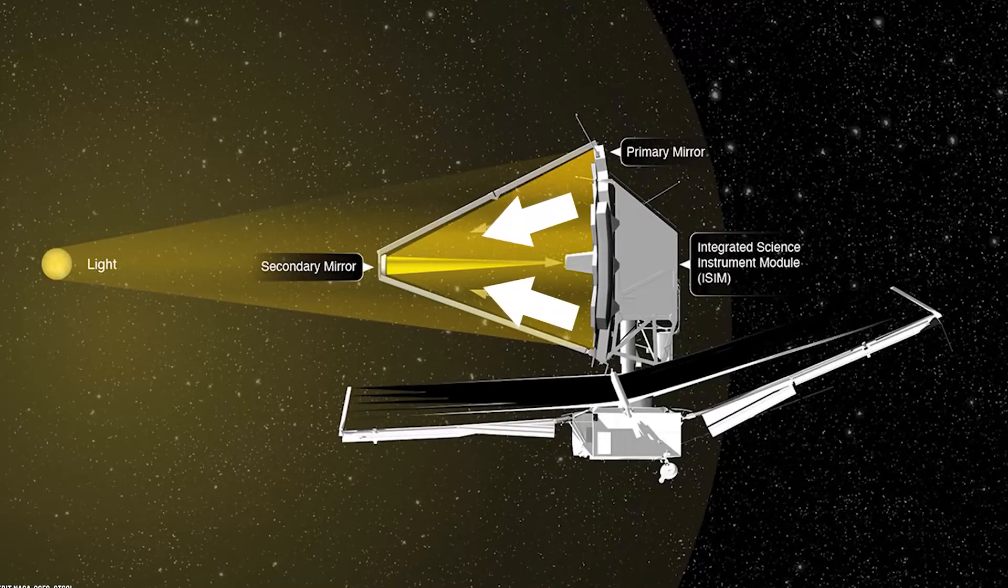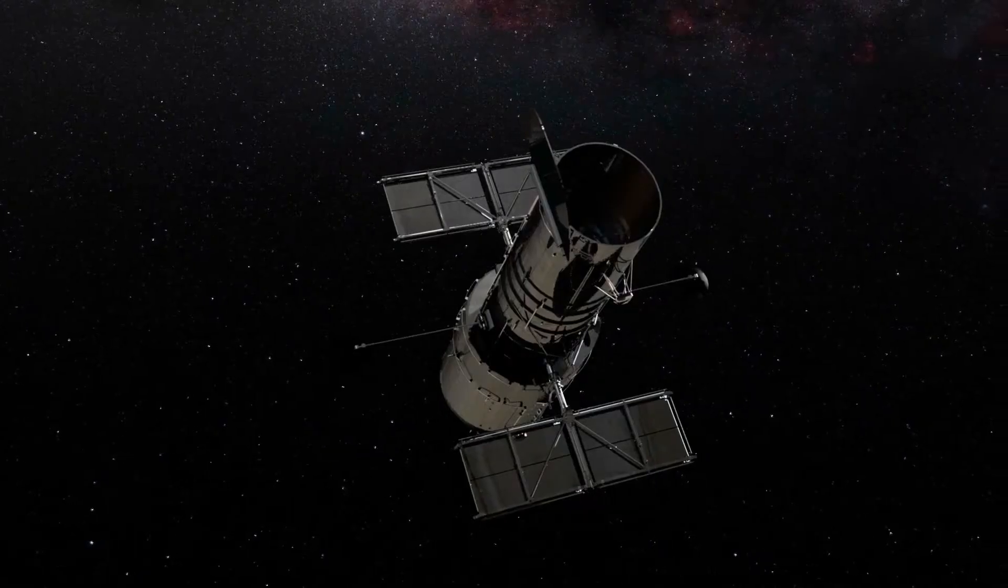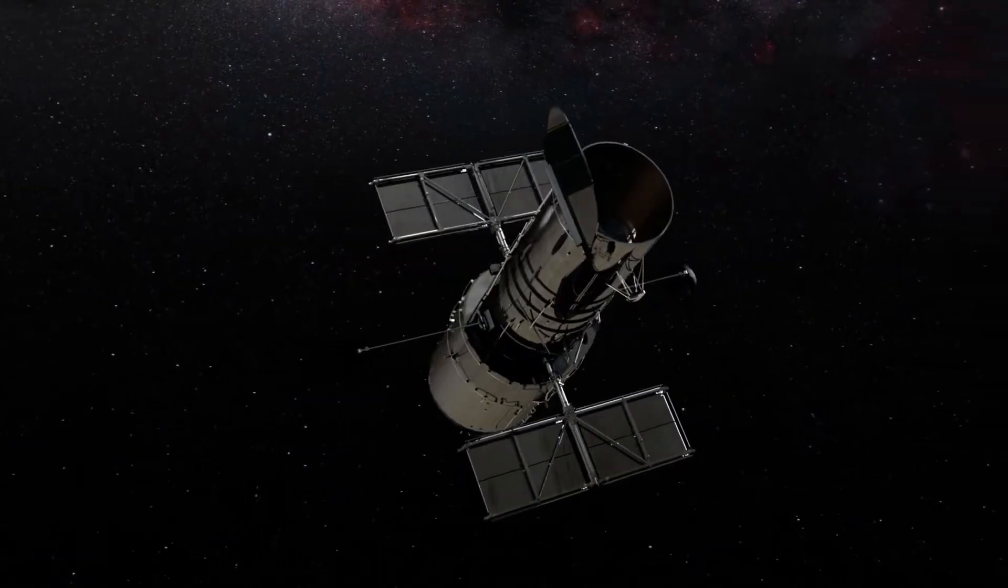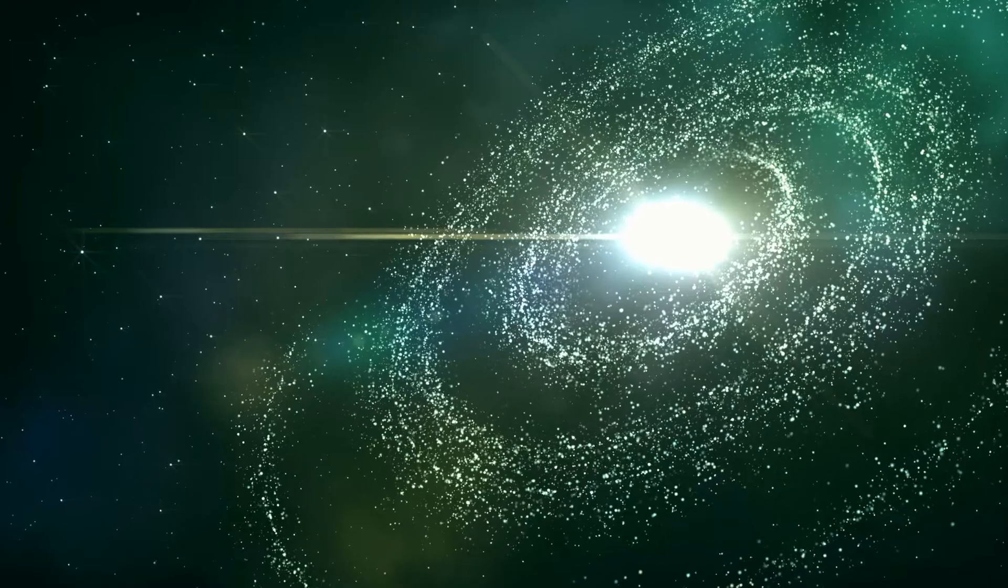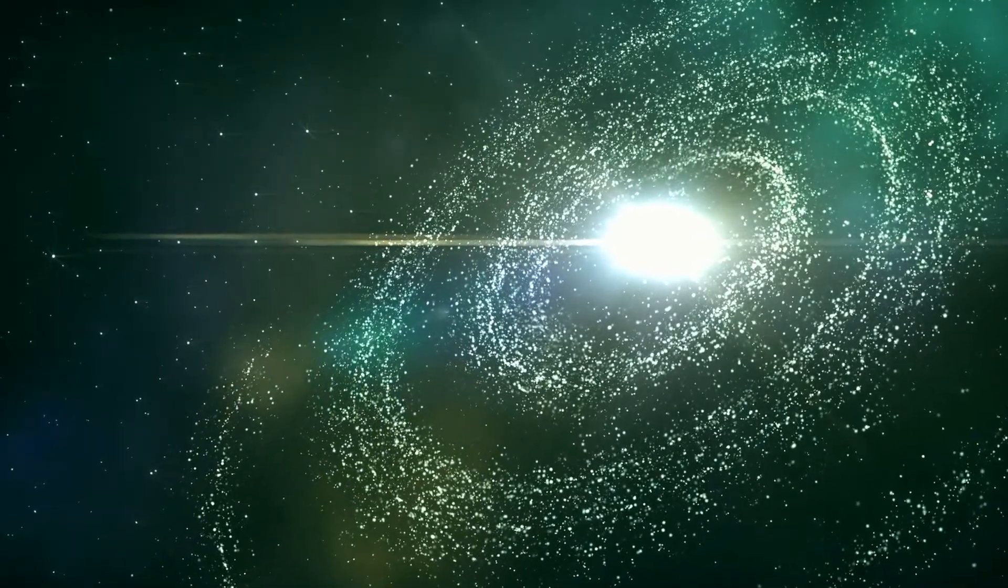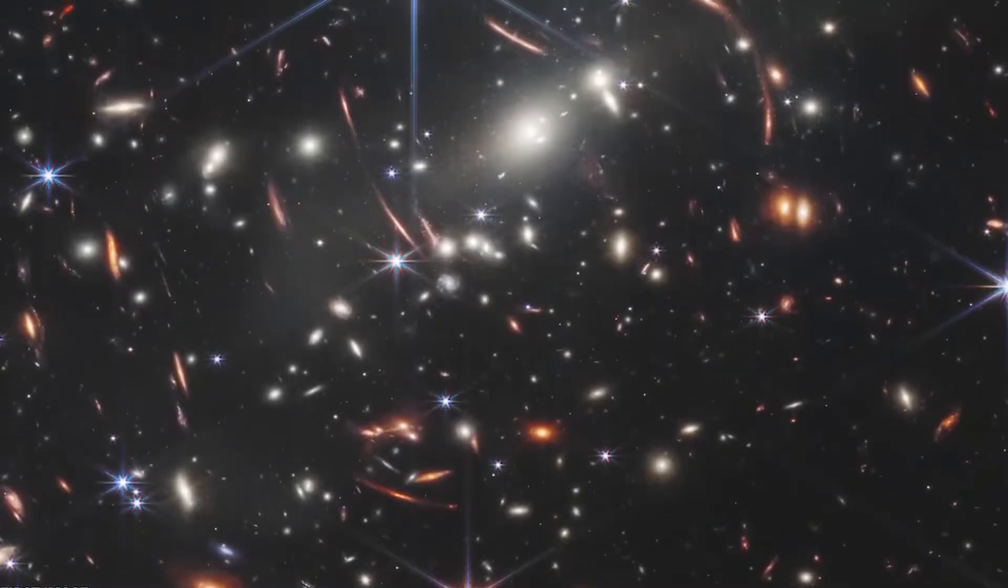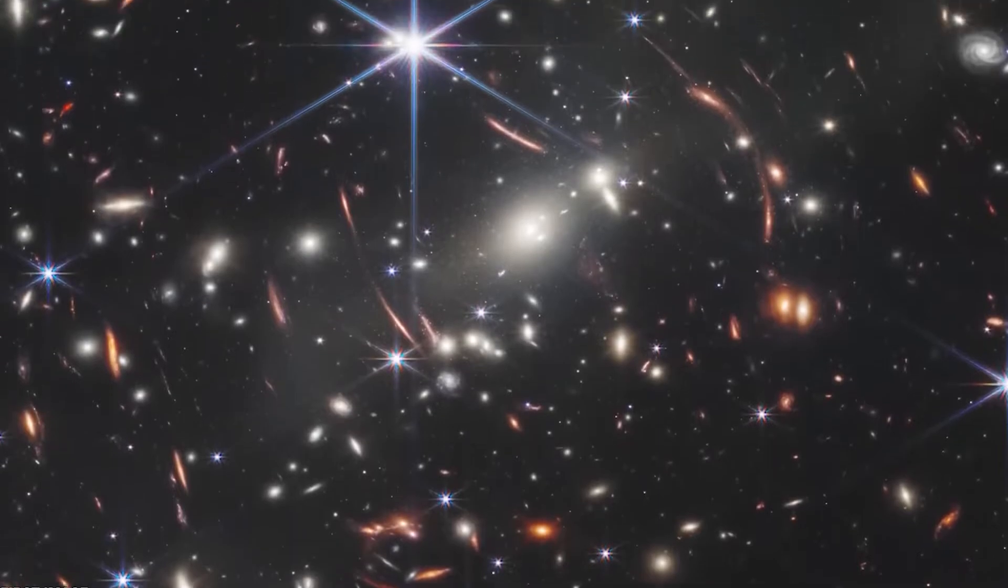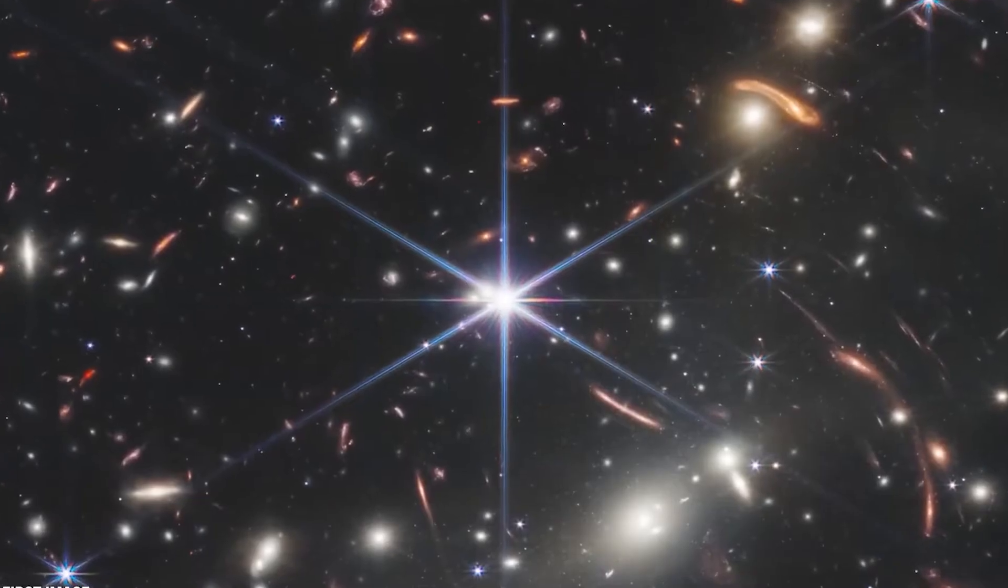While most of the light came from Webb, they still had to pull up images from Hubble for some additional blue light. The images used for this study mainly look into wavelengths that are longer than those visible to the naked eye, but are still part of the colors we're able to see.